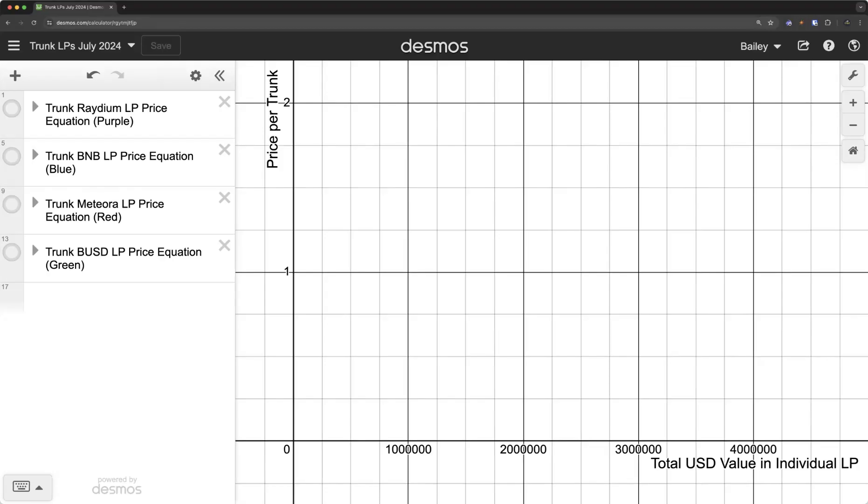Part of what I'm going to try to do here is break down the trunk price equations for each liquidity pool. The ultimate goal is to understand where that price comes from, but also to understand why BT has been really talking about that BUSD liquidity pool.